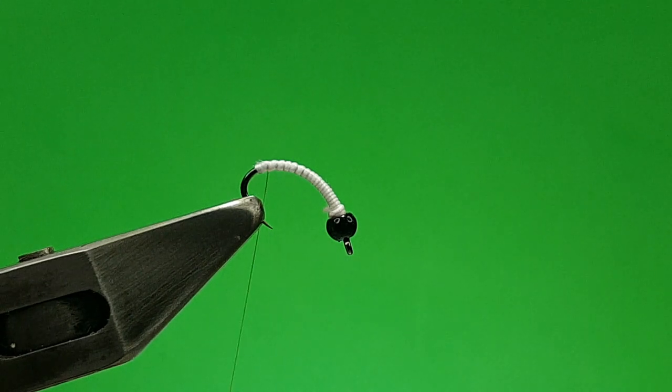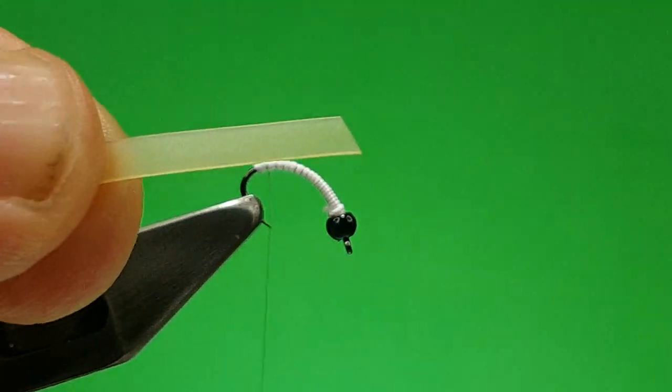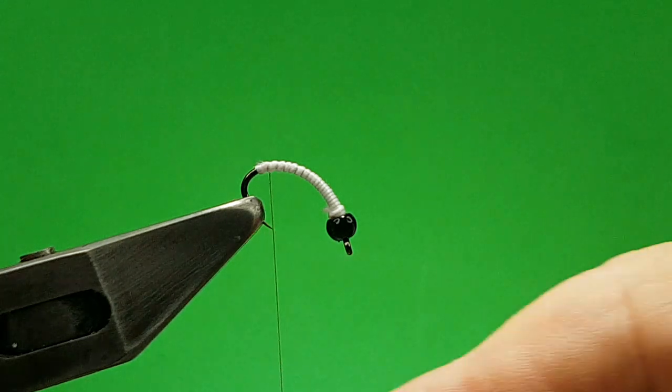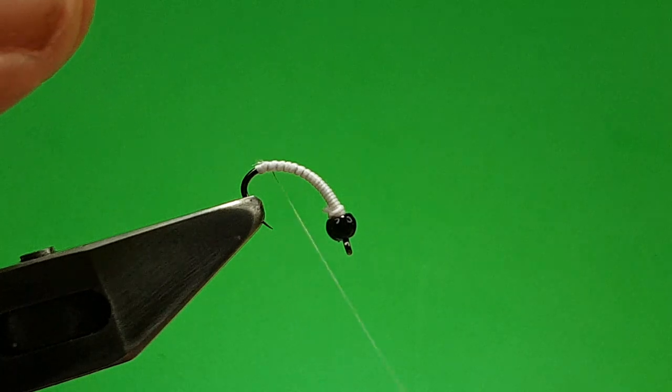And now what we want to do is tie in the Nimskin. Now what you want to do with the Nimskin is tie it at a slight angle, and then tie it in by the point. So, twist the thread towards you, and that'll tighten it up.